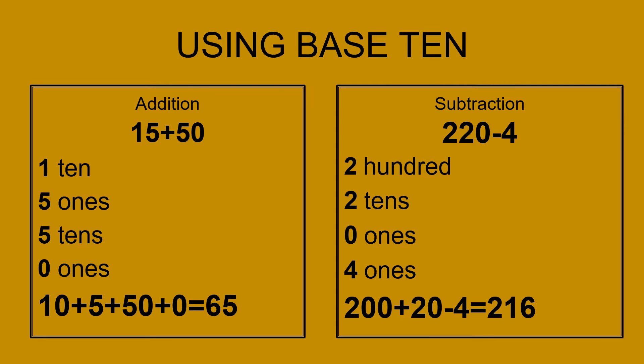When I bring it all down, I have 10 plus 5 plus 50 plus 0, which gives me 65. The way you can do this is saying 50 plus 10 will give you 60, plus 5 is 65. See how you like it so far.